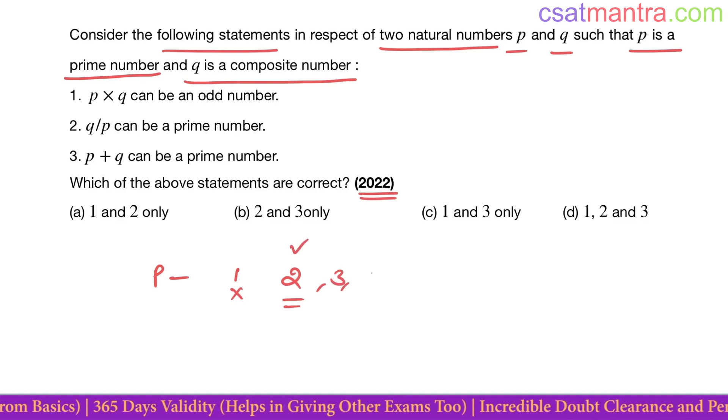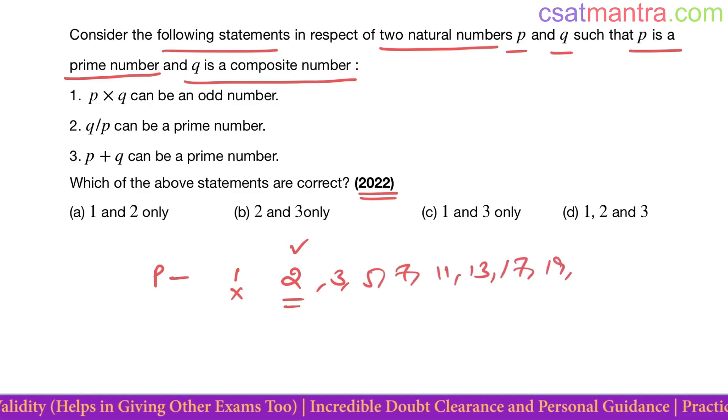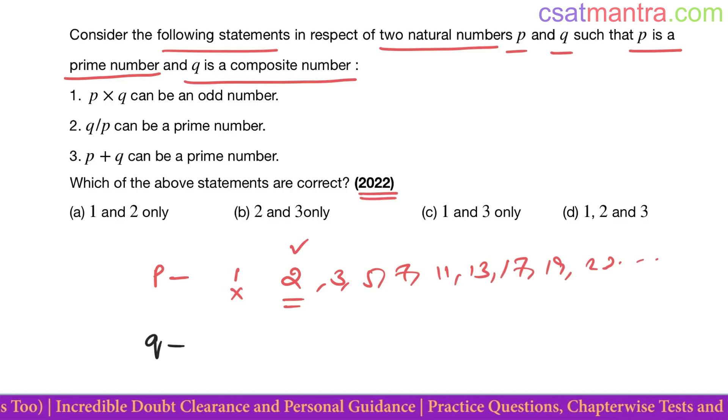Three, five, seven, eleven, thirteen, seventeen, nineteen, twenty-three, etc. Q is composite number. Composite numbers have factors more than two.